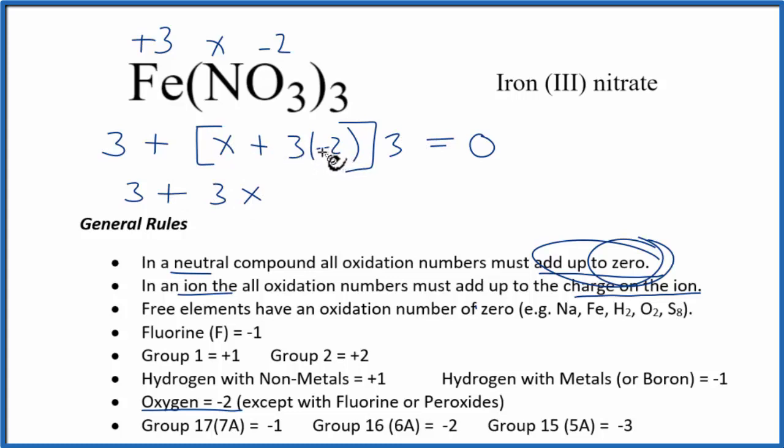Everything equals zero. So three X plus minus eighteen and three is minus fifteen. That equals zero. Three X equals fifteen.